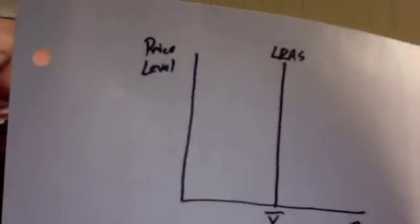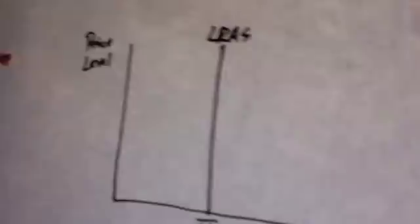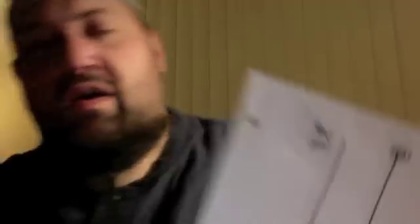Back when we were covering economic growth, we talked about a particular model. At the time we just introduced it and said we'd come back to it, because one of the things we're going to examine in the third quarter is economic fluctuations — like today's current recessionary gap where we're operating below our economy's capacity. That model you guys already know: the long-run aggregate supply curve, with real GDP on the x-axis and price level on the y-axis. That vertical LRAS represents potential output, Y-bar — how much our economy can produce at a sustainable level given its resources and technology.